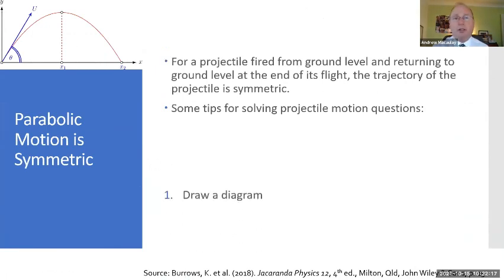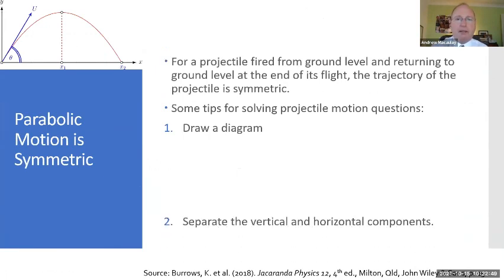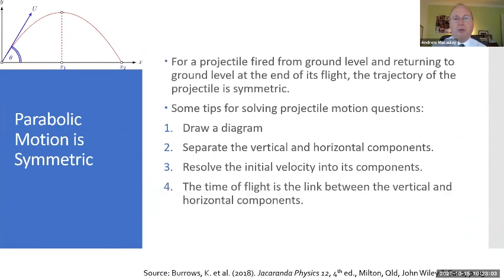So here are some tips for solving projectile motion questions. Draw a diagram. That's the first point. That's the most important thing in projectile motion. Once you draw a diagram, you then see where the information is. You work out the data. You work out directions. So from now on, whenever we're doing a projectile motion question, whether it's a simple question or a problem to solve, we need to draw a diagram. Second point is to separate out the vertical and horizontal components. The third step is to resolve the initial velocity into its components. And the fourth step is to take the time of flight as the link between the vertical and horizontal components. So t is the same whether you're looking at the vertical component or the horizontal component. And fifthly, when we've found an answer, always check to see if your answer is reasonable.